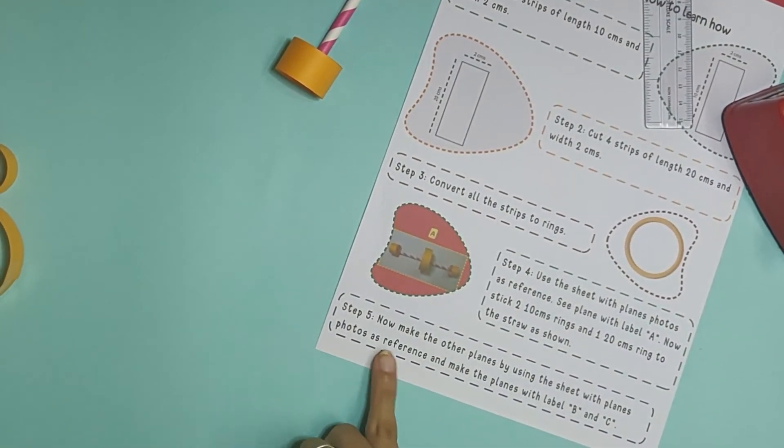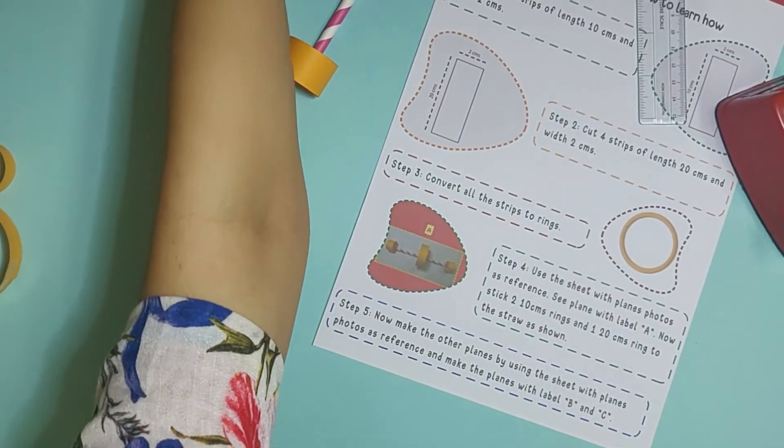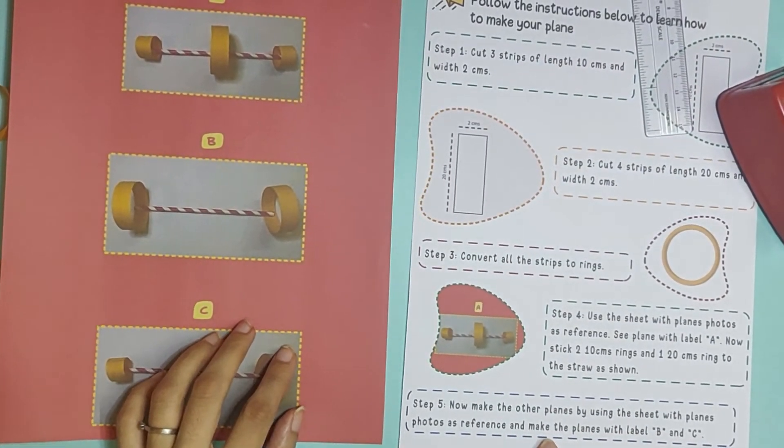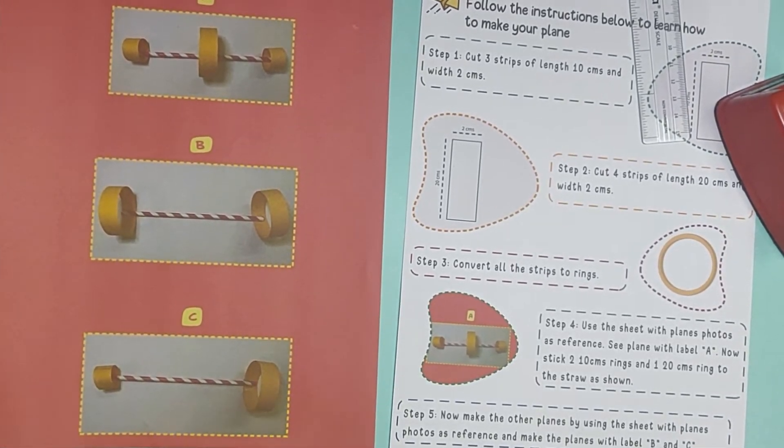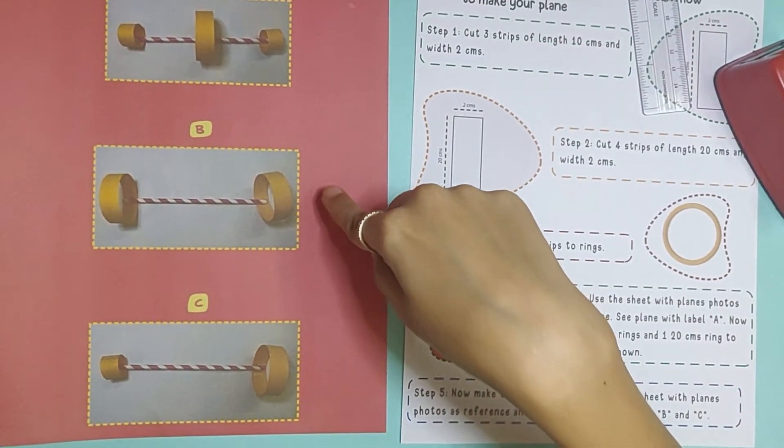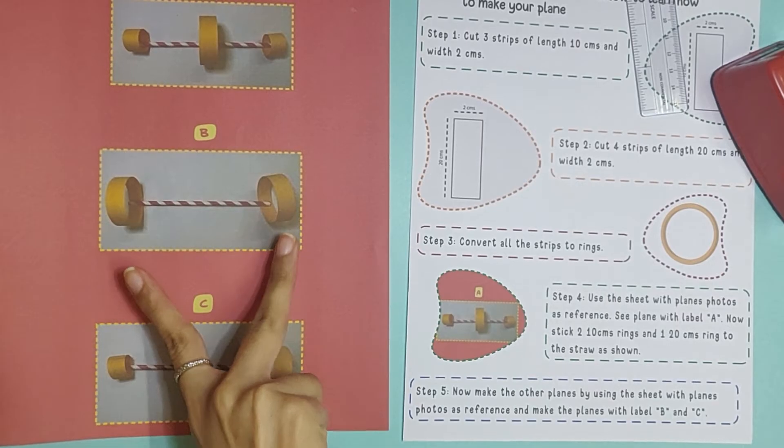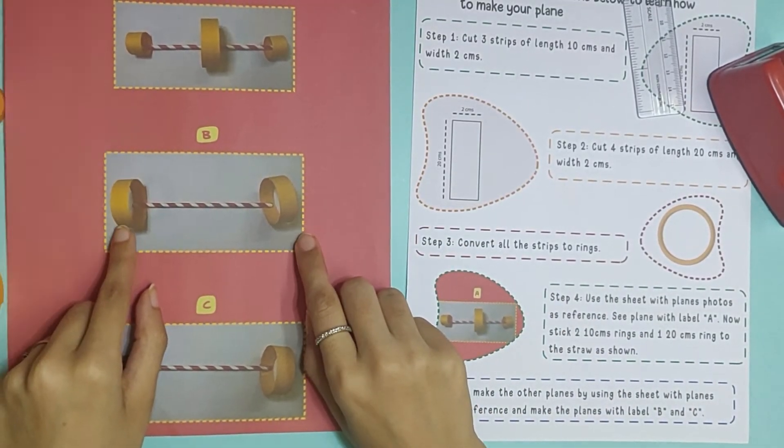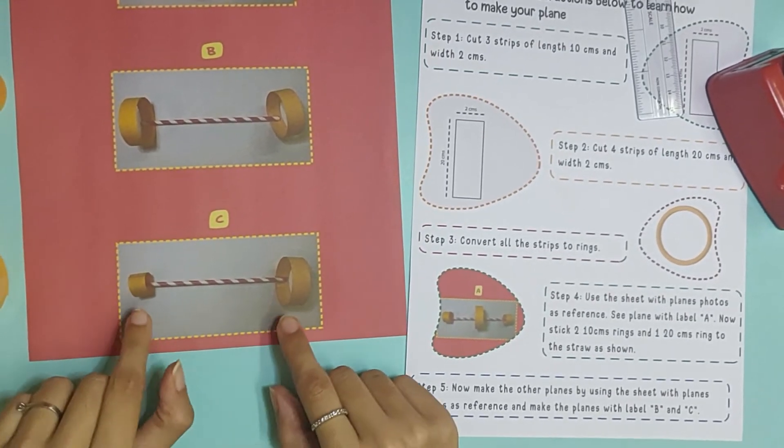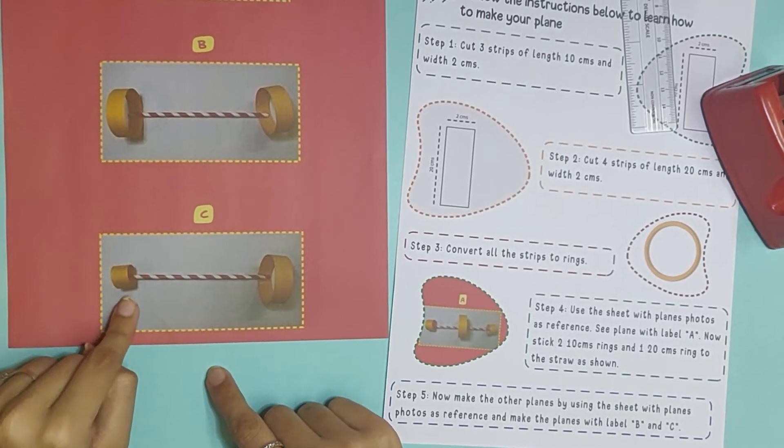So now one of our gliders is ready. When you make your glider, that is when you're doing step 4, please make sure that you've kept your glider on the floor or on the table where you're working and all the rings are facing up in one direction. If you hold it in your hand and do it, one of the rings might be down, one might be facing up and we don't want our gliders to be up and down. Now that your one glider is done, let's see what is the next step.